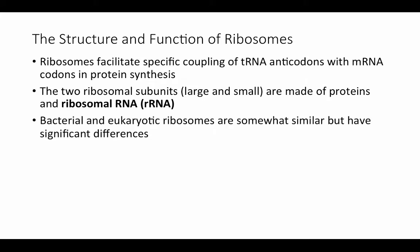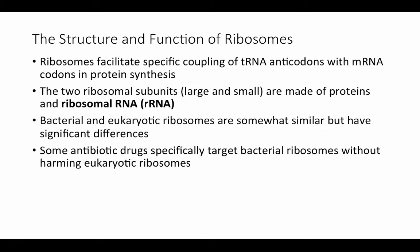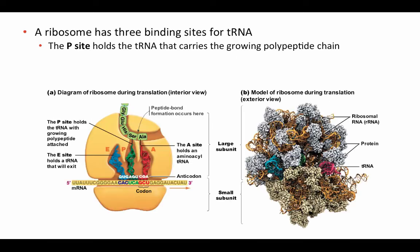Bacterial and eukaryotic ribosomes are somewhat similar but have significant differences. Whenever you have differences in the way bacteria and eukaryotes do things, that's something that can be exploited by antibiotic drugs to target bacterial ribosomes specifically — to interfere with their protein synthesis without harming eukaryotic ribosomes. Ribosomes have three binding sites for transfer RNA.